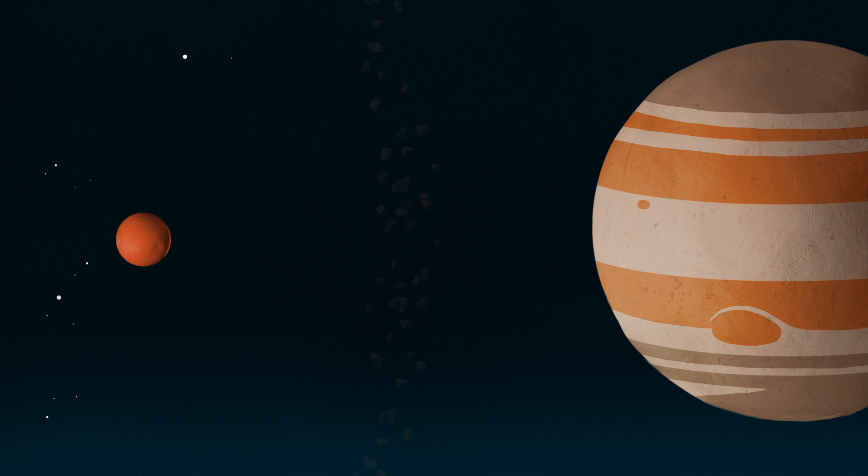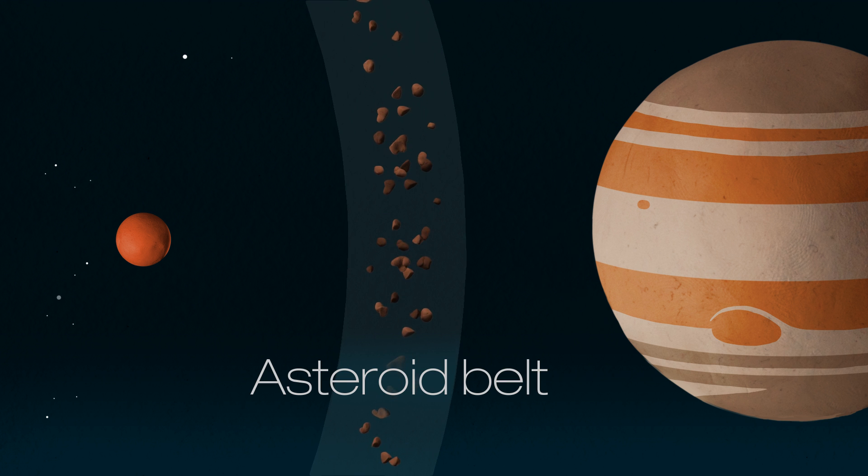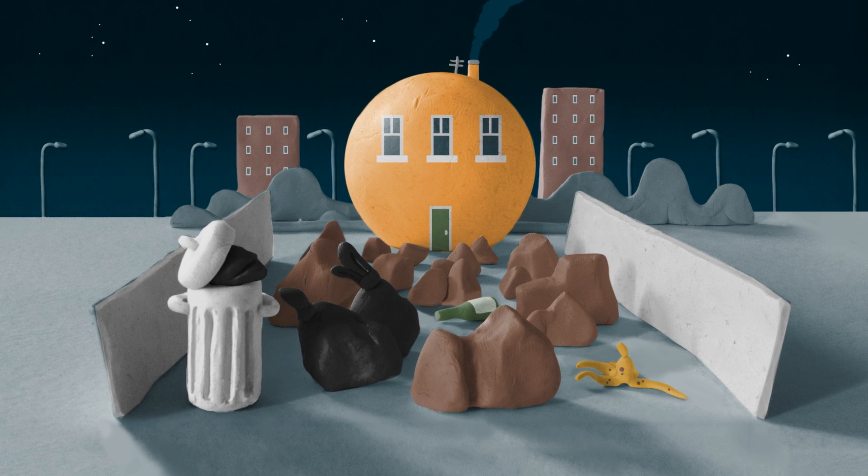Between Mars and Jupiter we find the asteroid belt. Due to the mighty gravitational effects of Jupiter, these chunks of rock and metal couldn't come together to form a planet, and instead made up a solar junkyard of sorts.